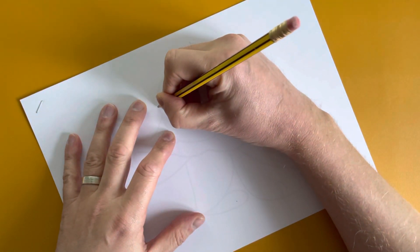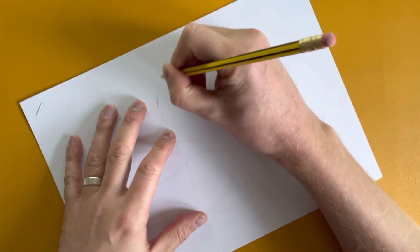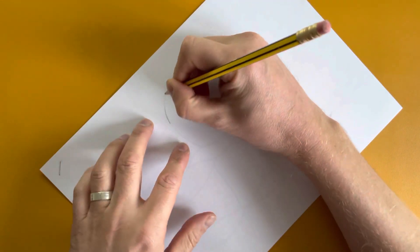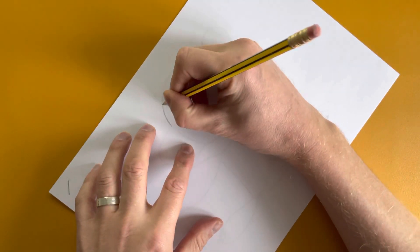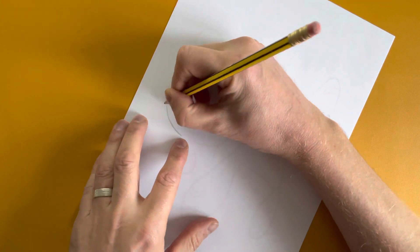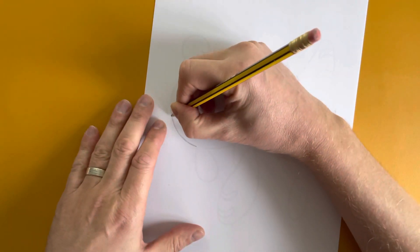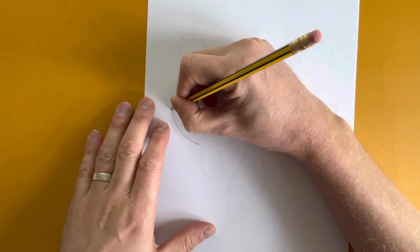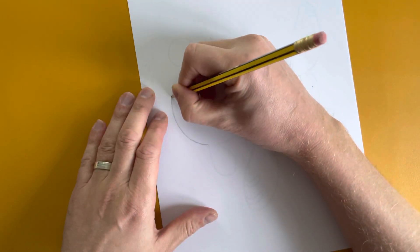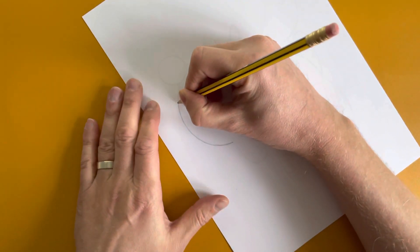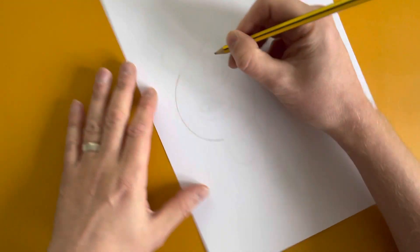I'm gonna start by moving the paper around and moving my wrist in, following the direction that I want to draw the line, keeping a nice smooth line.